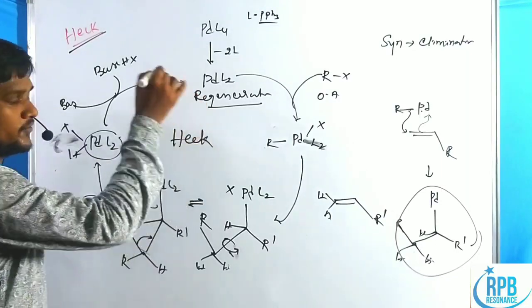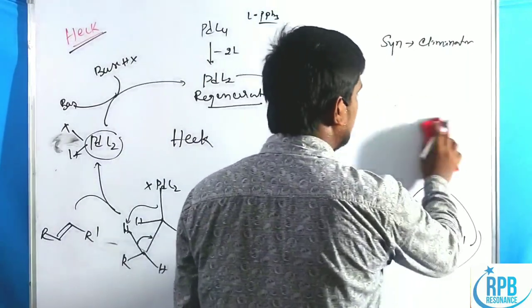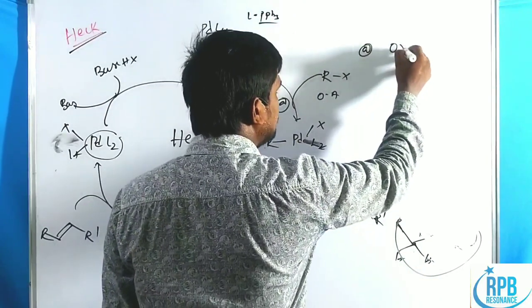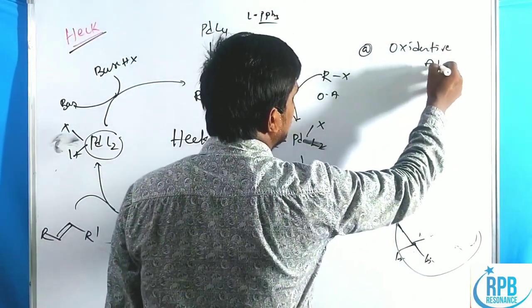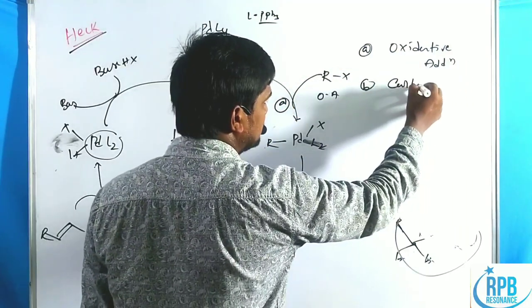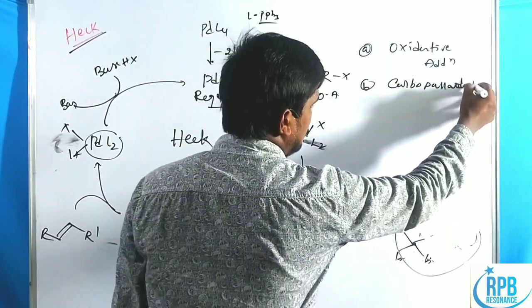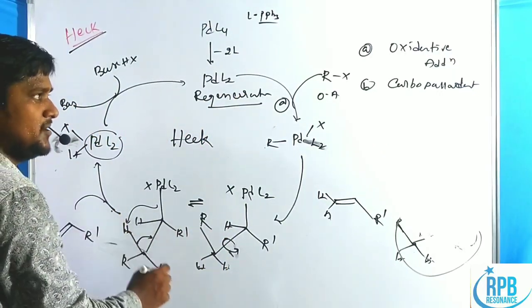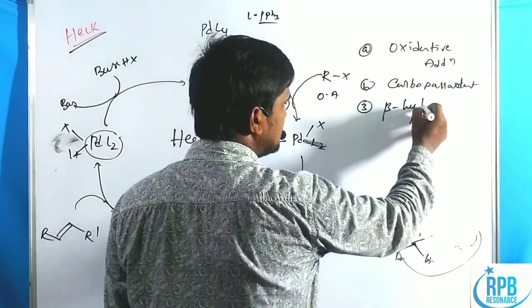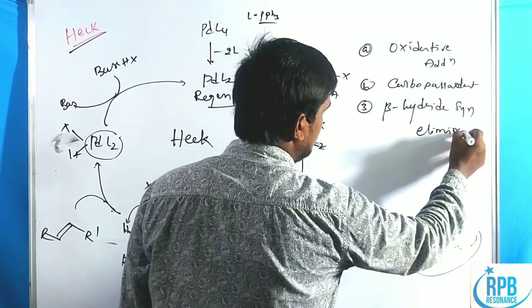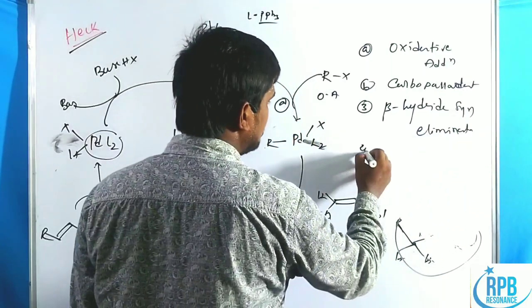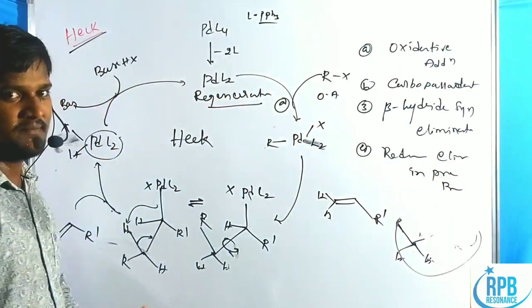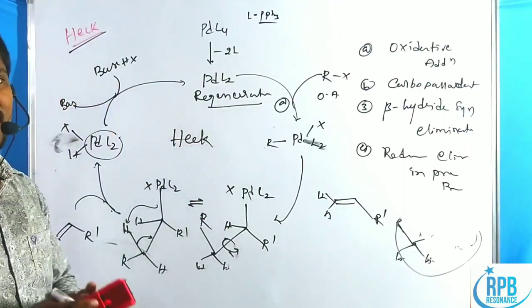This is the simplest representation of the Heck cross-coupling mechanism. The four steps are: (1) oxidative addition, (2) carbopalladation — migratory insertion of alkene to the palladium metal, (3) isomerization followed by beta-hydride syn elimination, and (4) reductive elimination in the presence of base. These four steps explain the palladium Heck cross-coupling reaction.